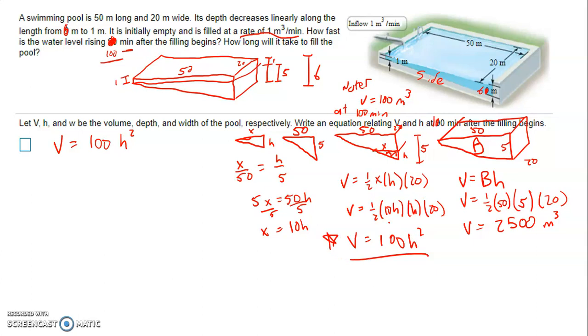Getting to this part is the hard part. And you might want to hit rewind and rewatch this video. Hopefully I explained it correctly. Anyway, now the calculus part, and this becomes fairly easy. So we're going to take the derivative with respect to time. So dv/dt equals 200h times dh/dt.